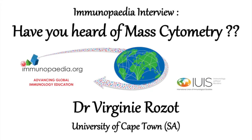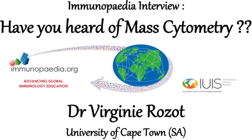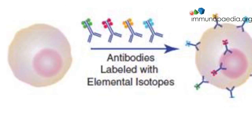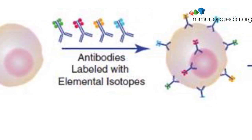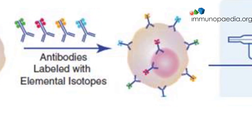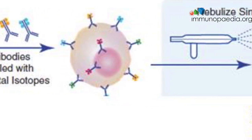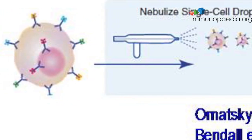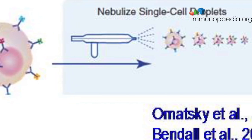Thank you Virginie for agreeing to be interviewed and to talk about mass cytometry. So for people who don't know, what is mass cytometry? Mass cytometry is a fusion of basically two experimental platforms. It's a mix of flow cytometry and elemental mass spectrometry, and the current instrument is called cytometer by time of flight, or CyTOF.